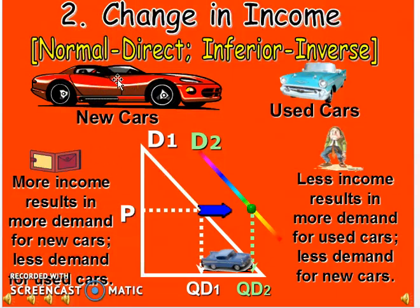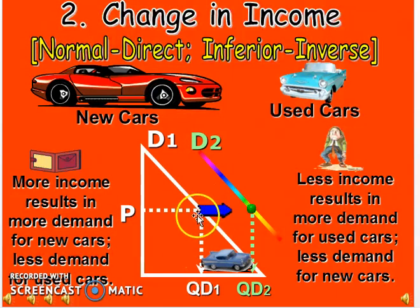For example, a new model car is shown here. Whenever the income of the consumer increases, the consumer would like to buy new cars rather than old cars, along with new clothes and similar things. Inferior goods are those goods where, when the income of the consumer increases, the consumer would like to buy less of those products, like used cars and used clothes.